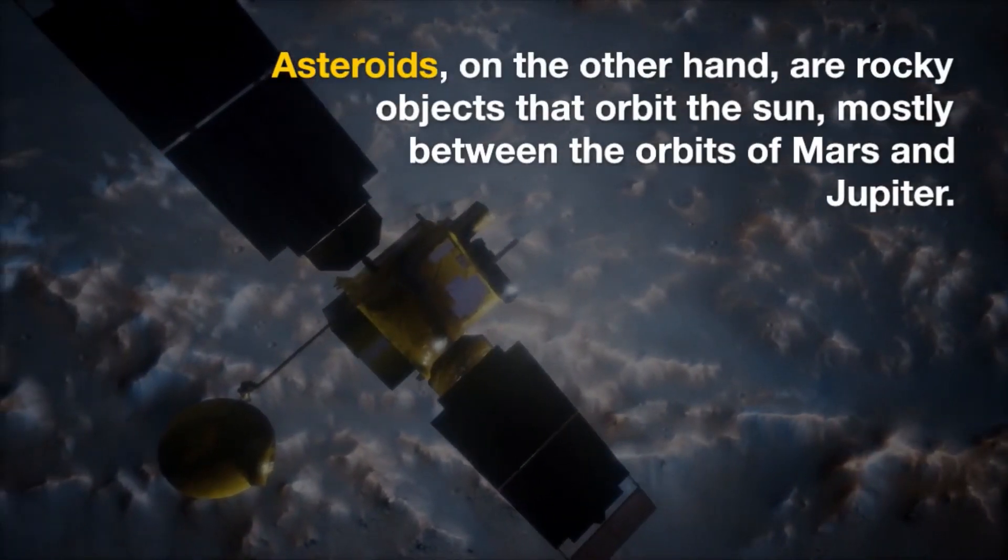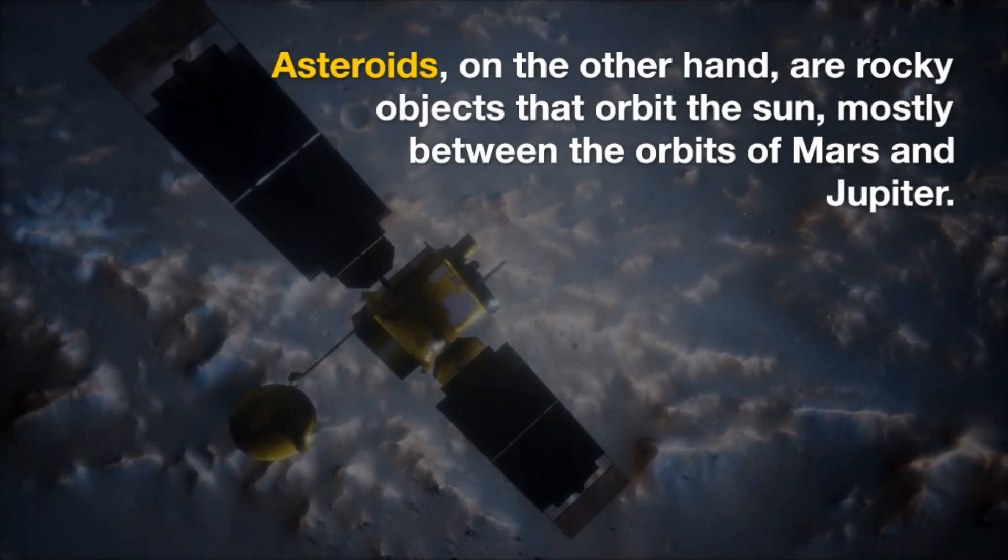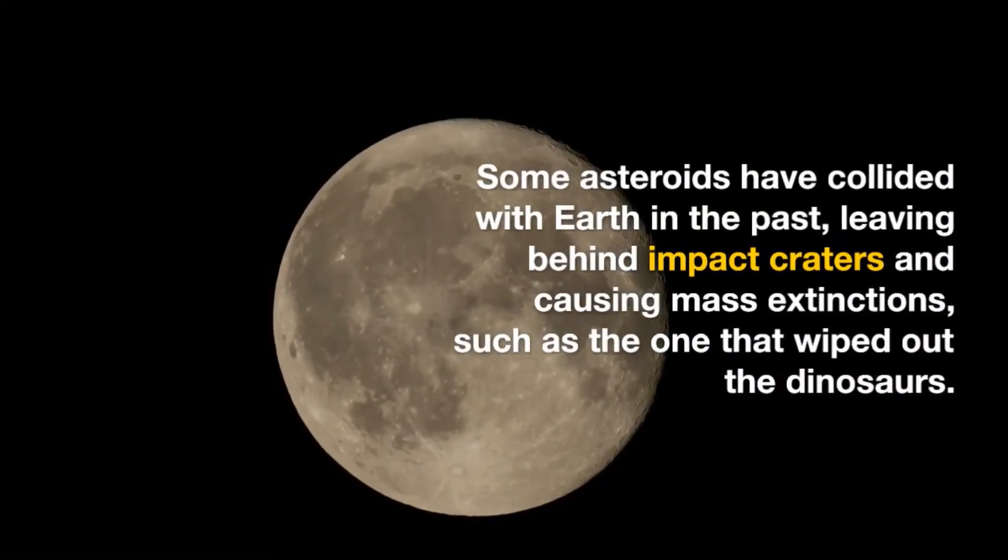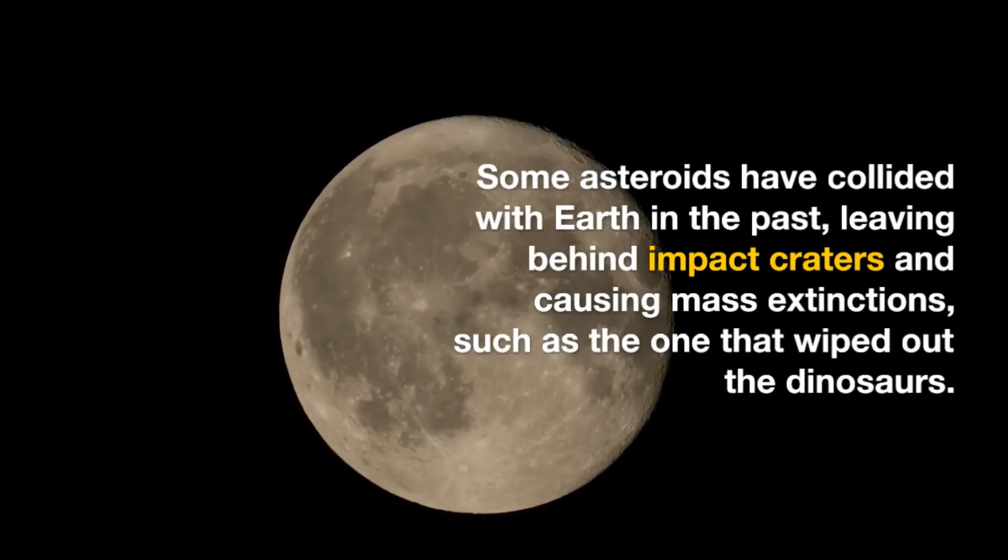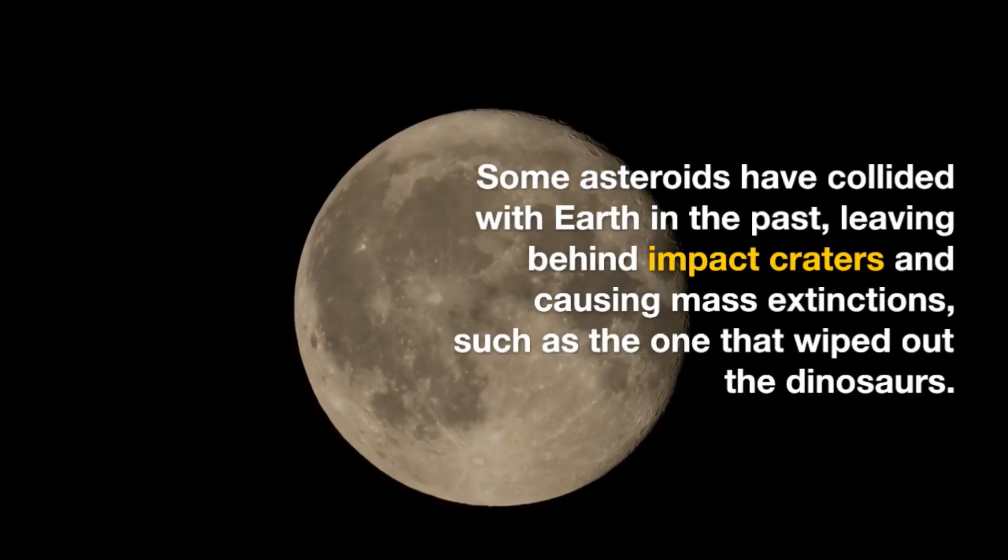Asteroids, on the other hand, are rocky objects that orbit the Sun, mostly between the orbits of Mars and Jupiter. Some asteroids have collided with Earth in the past, leaving behind impact craters and causing mass extinctions, such as the one that wiped out the dinosaurs.